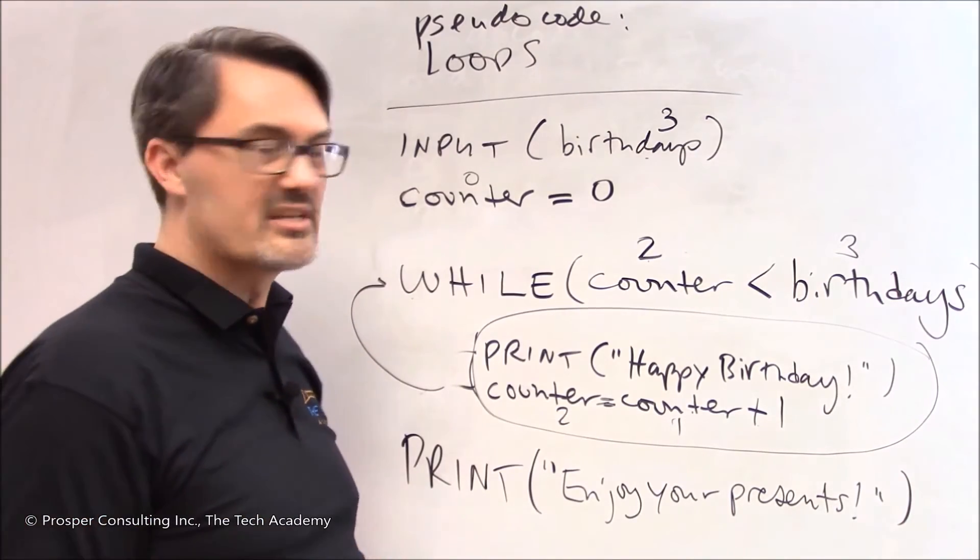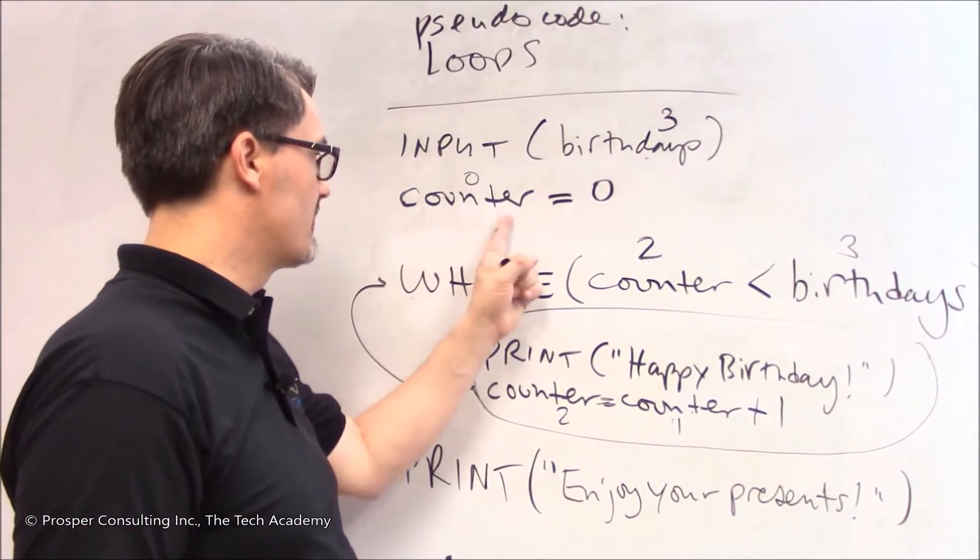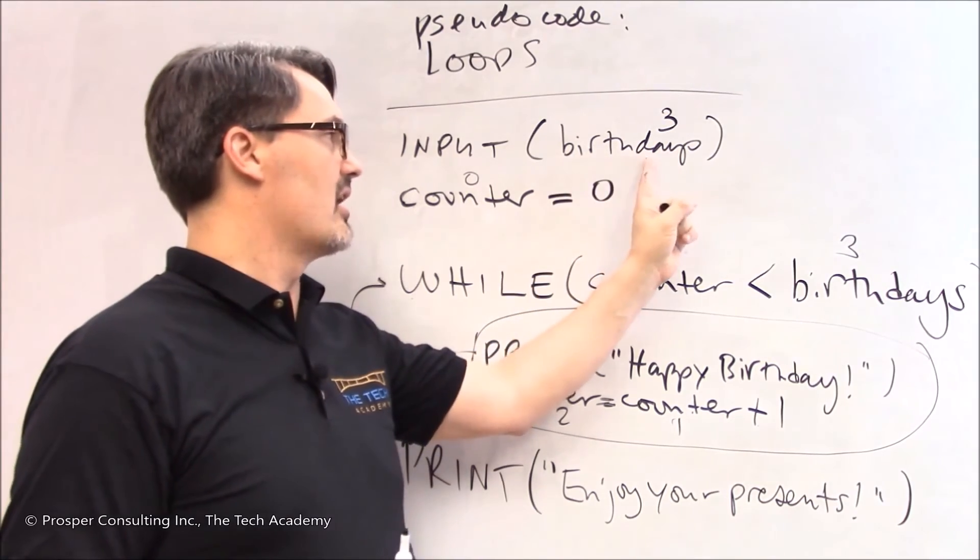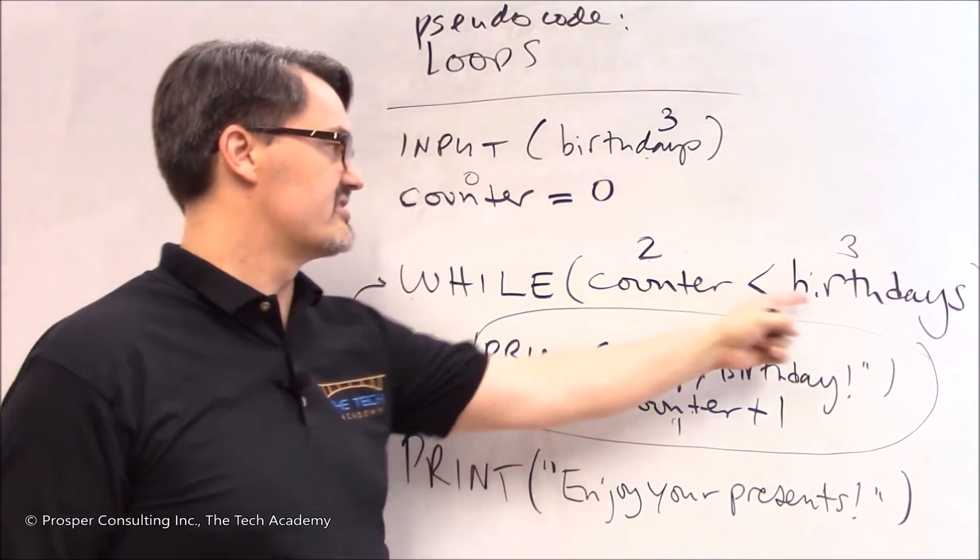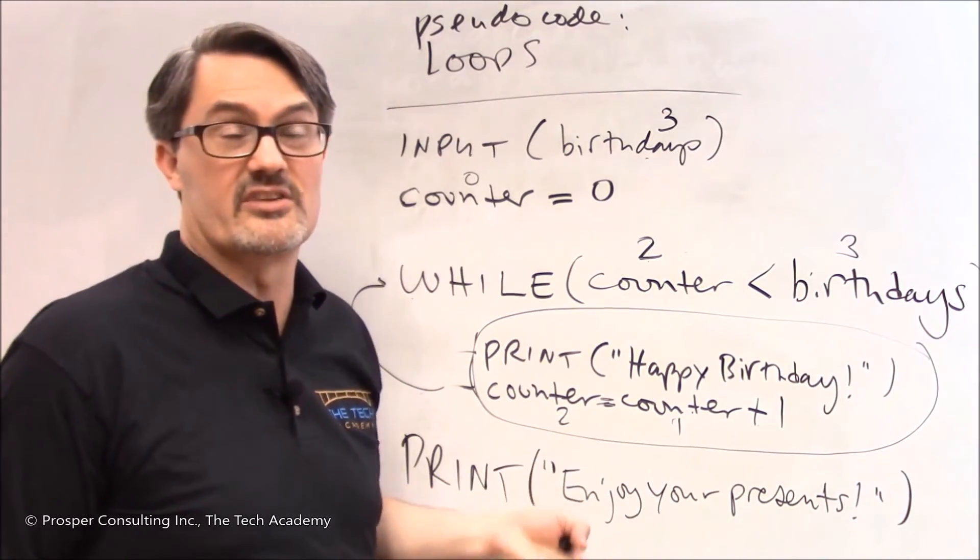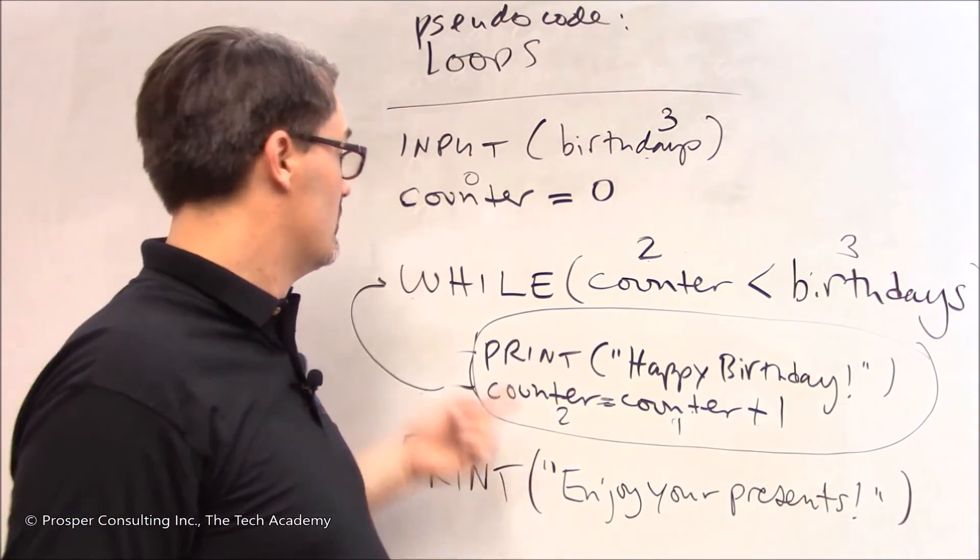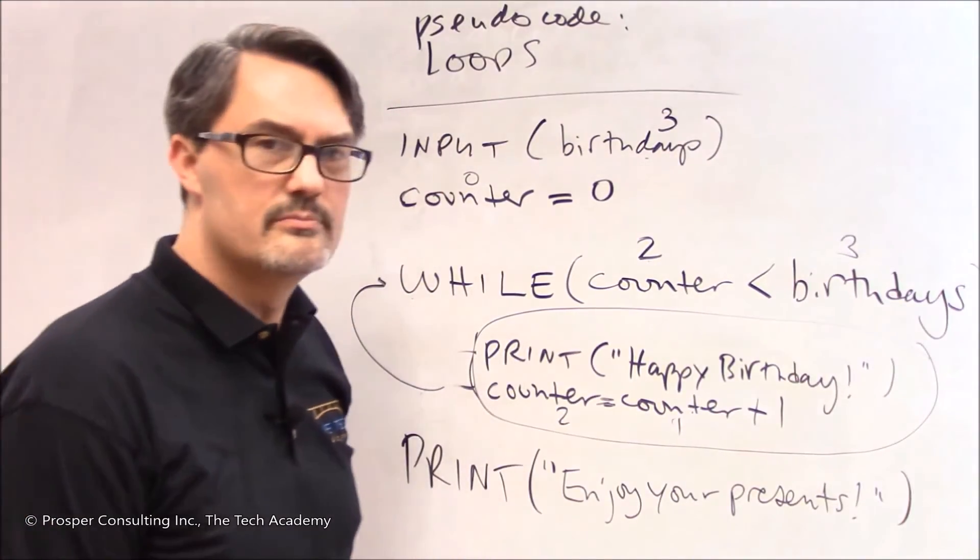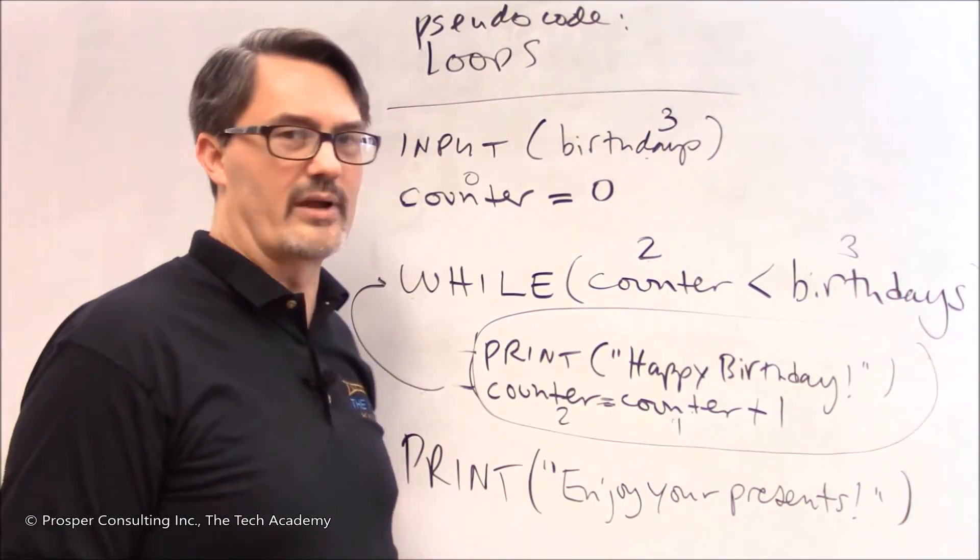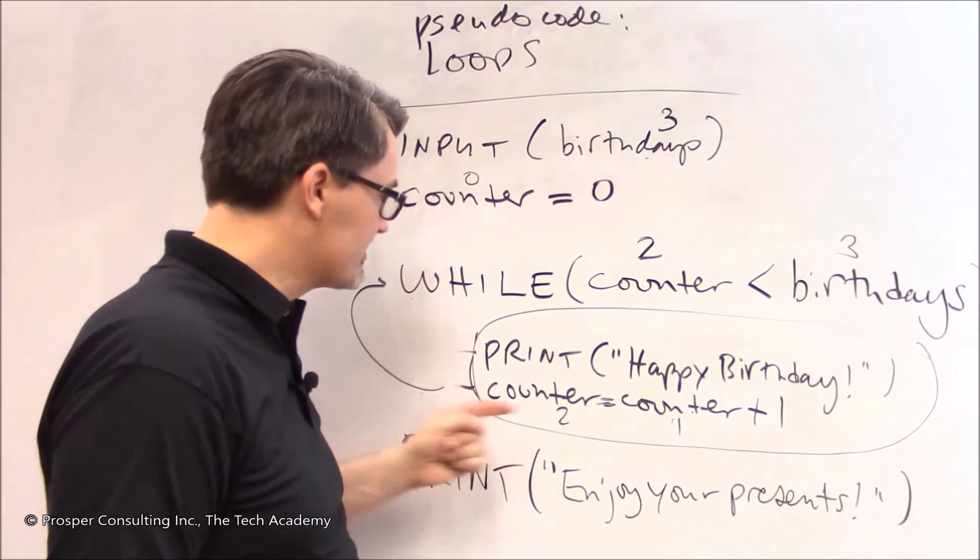It has little locations in memory that are assigned to store the value of counter and little locations in memory that are assigned to store the value of birthdays. So whenever it has to do this statement, it just looks in the memory location and says well what do I have? Well this time around it's got a two for counter and a three for birthdays. Two is still less than three. So it does this again.